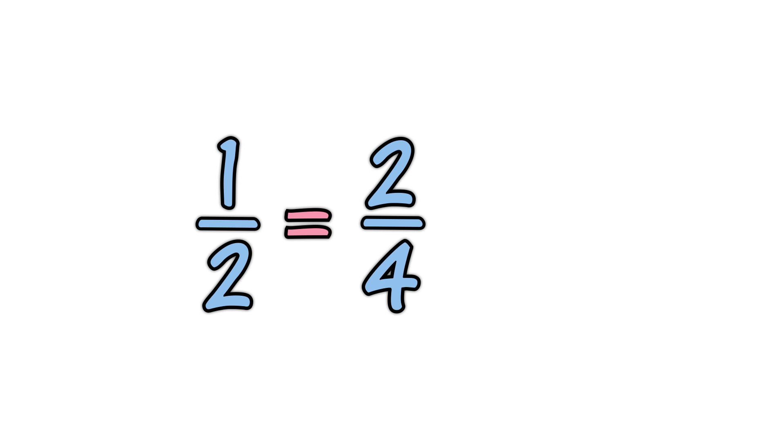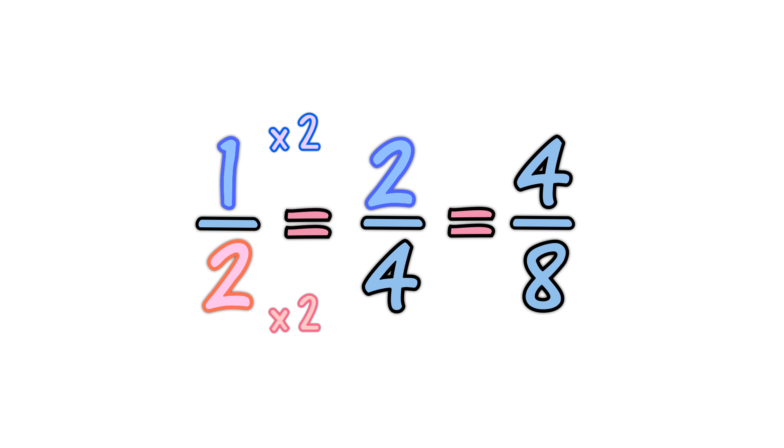So, here is why those fractions are really the same. When you multiply the top and bottom of one-half by two, you get two-fourths, because one times two is two, and two times two is four.